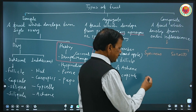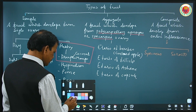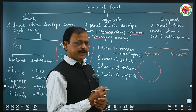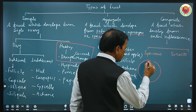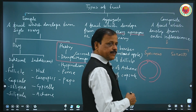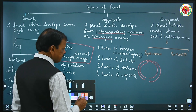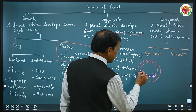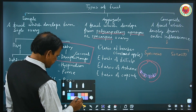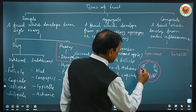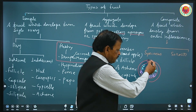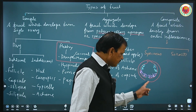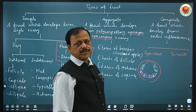Composite fruits develop from an entire inflorescence. The fruit is thick — as you would have seen in banyan tree fruit, peepal, or anjir (fig). You will find a small hole, and this is actually a thalamus. What we eat is a false part having male and female flowers. Female flowers are present at the base where the seeds are developed, and male flowers are present just above them.